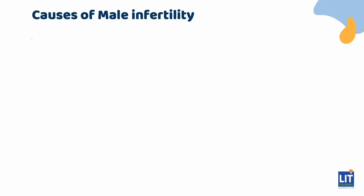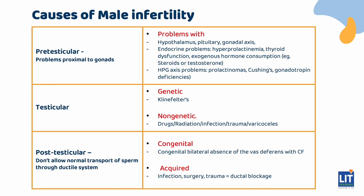These are some possible diagnoses in the spectrum of male infertility. Pre-testicular causes usually refer to problems proximal to the gonads — meaning problems with the hypothalamus, pituitary, and gonadal axis, such as hypothalamic hypogonadism. Other endocrine problems such as pituitary disease resulting in hyperprolactinemia, thyroid dysfunction, and exogenous hormone consumption like steroids and testosterone can also contribute to infertility.